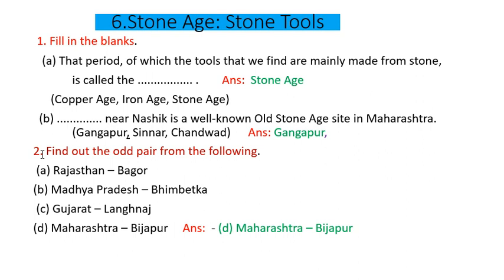Question number two: Find out the odd pair from the following. A: Rajasthan – Bagor. Bagor is in Rajasthan. B: Madhya Pradesh – Bhimbetka. Bhimbetka is in Madhya Pradesh. C: Gujarat – Langhnaj. Langhnaj is in Gujarat. D: Maharashtra – Bijapur. But Bijapur is in Karnataka, not Maharashtra. So the odd pair is D, Maharashtra – Bijapur.